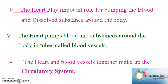In the circulatory system, the heart plays an important role in pumping blood and dissolved substances around the body — from the heart to different parts of the body and from different parts back to the heart. The body also requires important substances like vitamins and minerals, which are dissolved in the blood and transferred from one part to another through the heart.